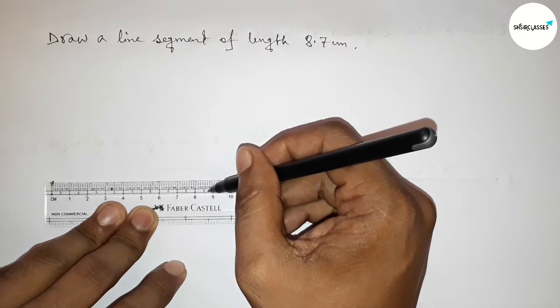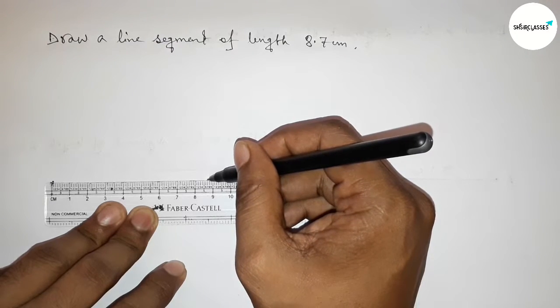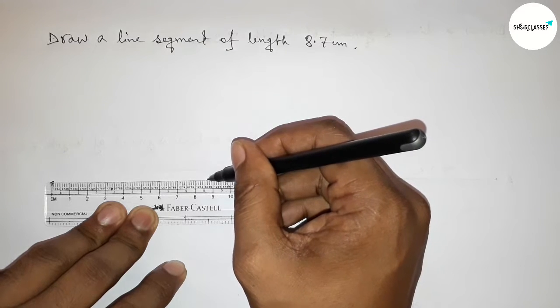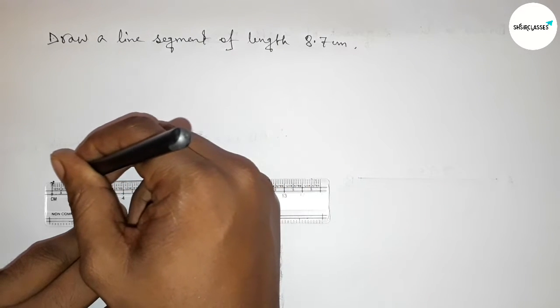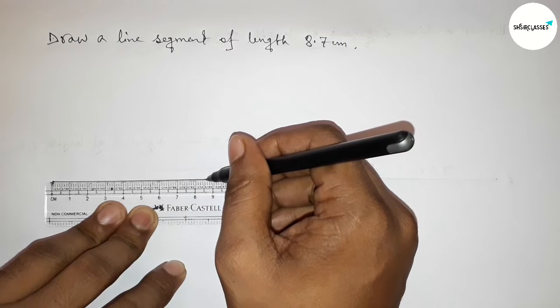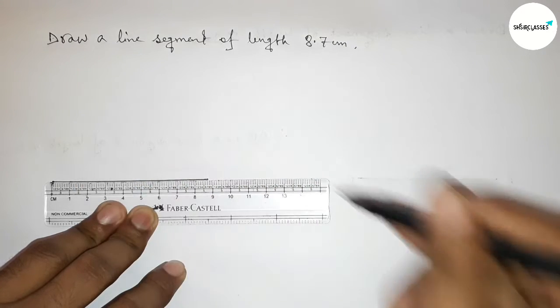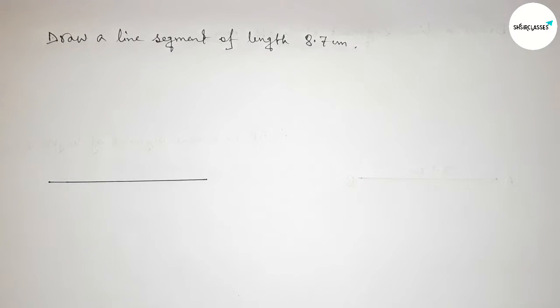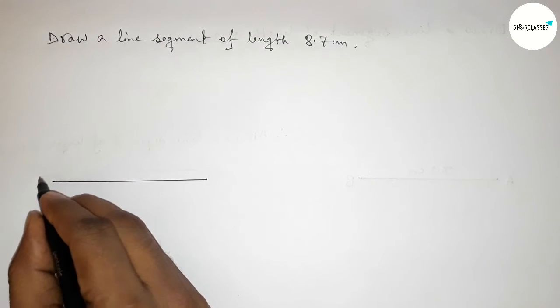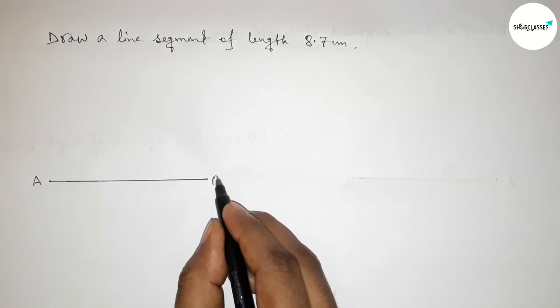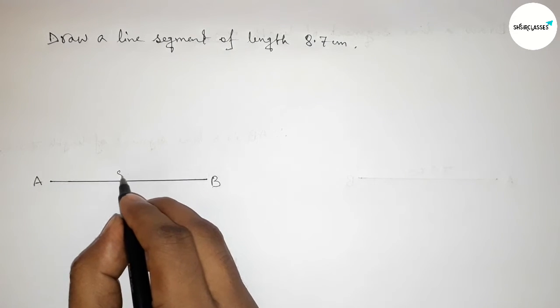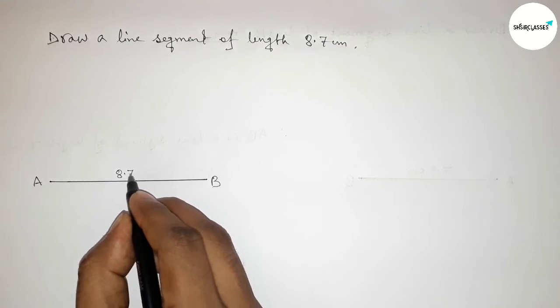So first we have to mark eight point seven, then join this line perfectly. Okay, next taking here point A and here B. So AB is a line segment of length eight point seven centimeters.